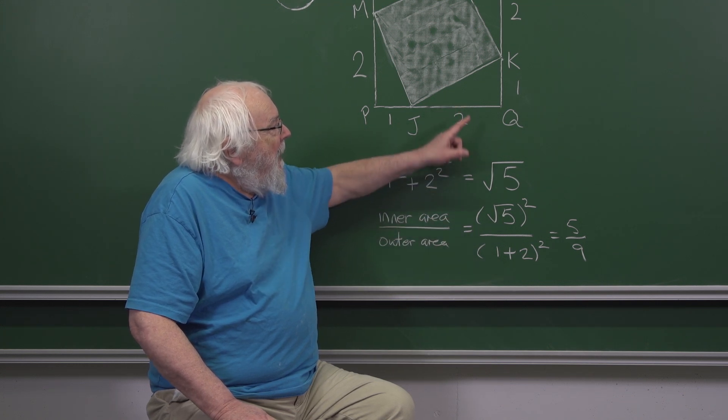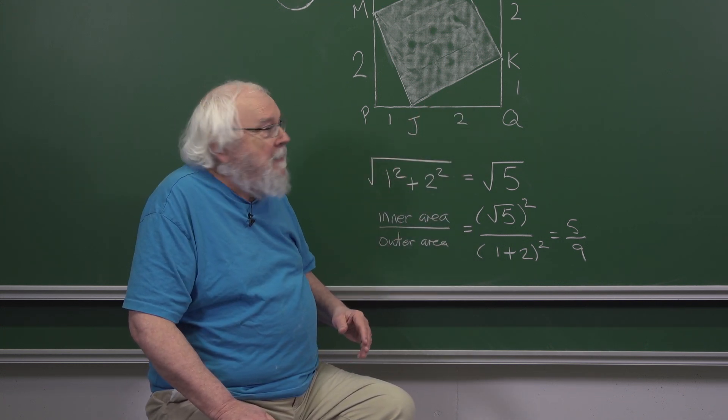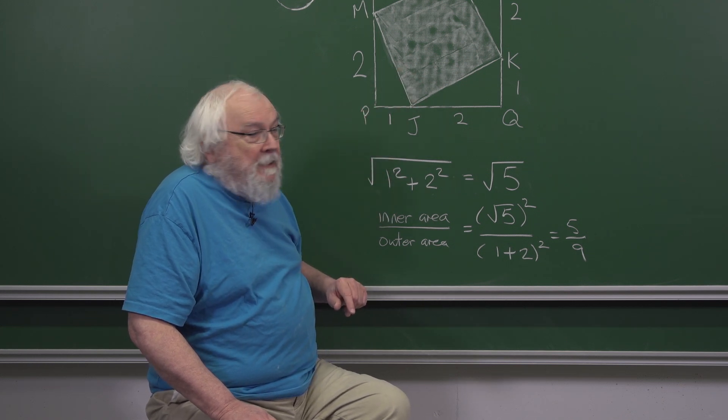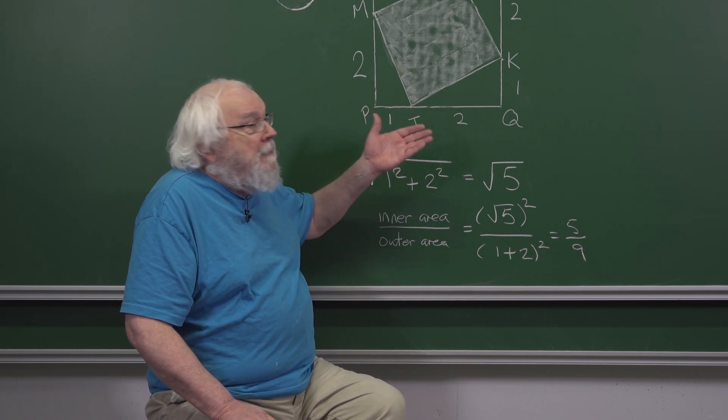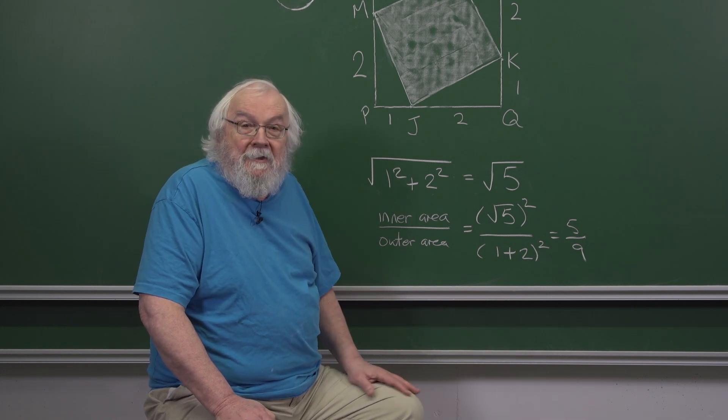So each of these has area 1. There are four of them. So to get the area of the shaded square, you take 9, take away 4, and that's 5, and you get to the same answer.